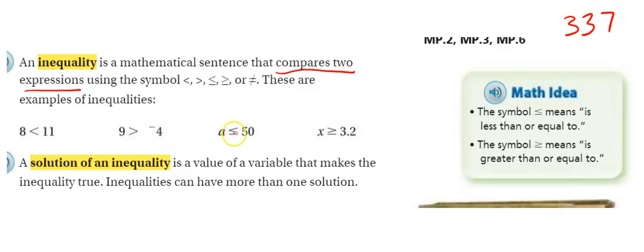A is less than or equal to. That's what that little line underneath means. It could also be equal to. So this variable A is either going to be 50 or lower. It could be 50, though. It could be equal to. And X is greater than or equal to 3.2.